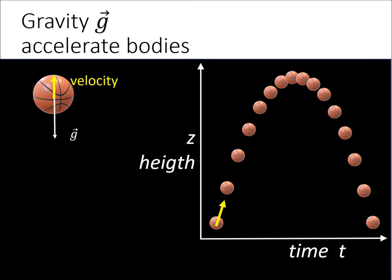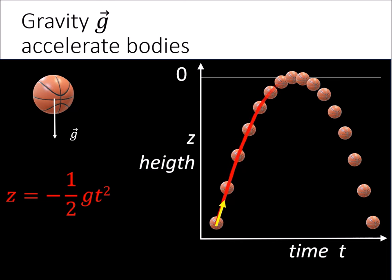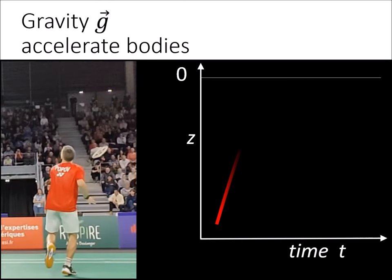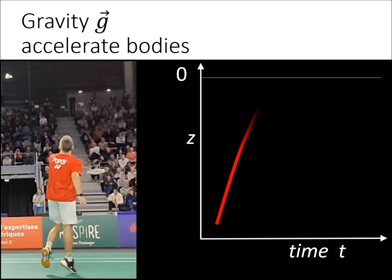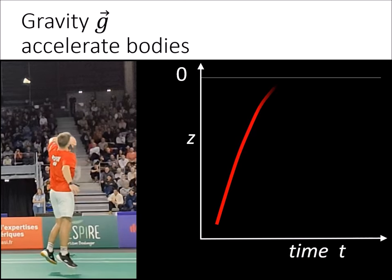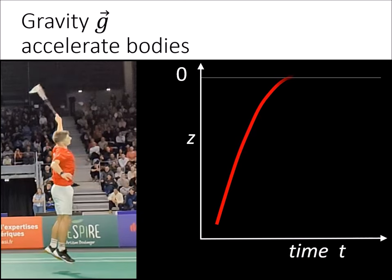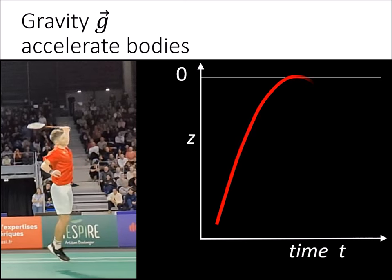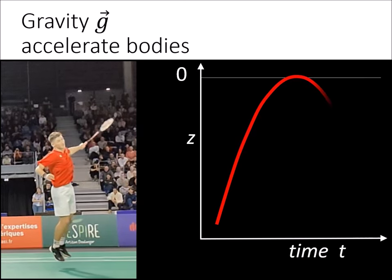Because of this acceleration, the curve of height versus time describes a parabola. The same applies to a jumping player, which reaches maximum height and then falls back down again.